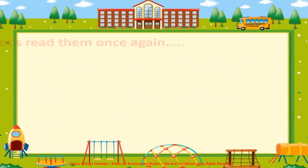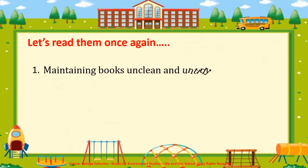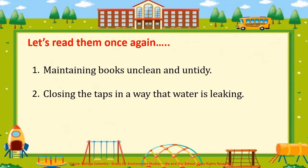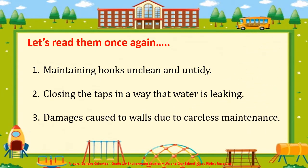Let's read them once again and see how the school objects get damaged. Number 1: Maintaining books unclean and untidy. Number 2: Closing the taps in a way that water is leaking. Number 3: Damages caused to walls due to careless maintenance.